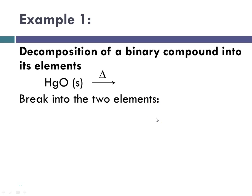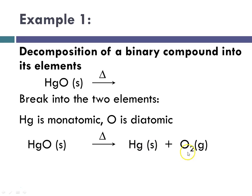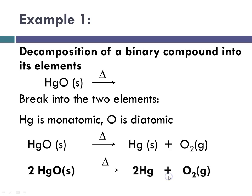We're going to break it into its two elements — in this case, mercury and oxygen. Mercury is monatomic, and oxygen is diatomic. So mercury(II) oxide is going to decompose, and we're going to get mercury, which is a solid, and O2, which is a gas. Going back and balancing: since there are two oxygens on this side and only one on this side, we put a 2 in front of mercury on both sides. So, two mercury(II) oxides will decompose with heat to produce two atoms of mercury and O2.